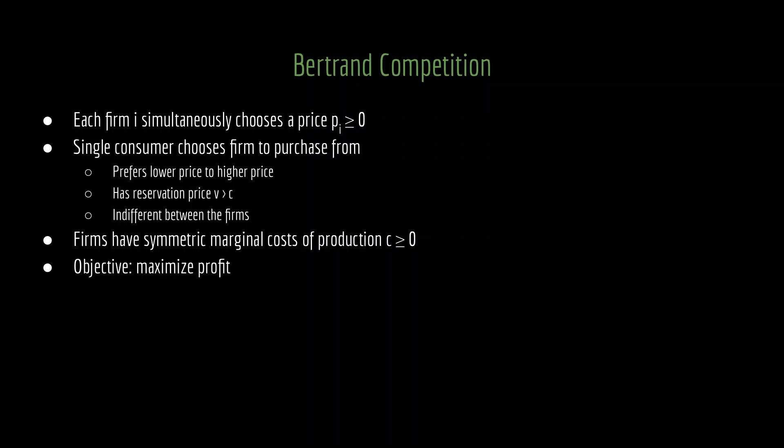We have a single consumer in this model, and all the consumer does is choose whether to buy from a firm and which firm to buy from. We'll have some straightforward assumptions about this consumer. The consumer prefers lower prices to higher prices. The consumer has a reservation price V, which we're going to assume is larger than the marginal cost of production C.